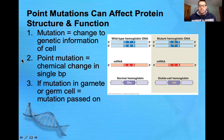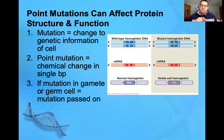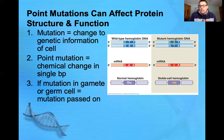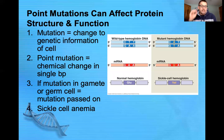If that mutation occurs in a gamete or a germ cell — germ cells are the cells that divide to produce our gametes, which are our sperm cells and egg cells — then that mutation can get passed on to the next generation. If the gametes produced from that germ cell are then involved in fertilization, the mutation gets passed on.